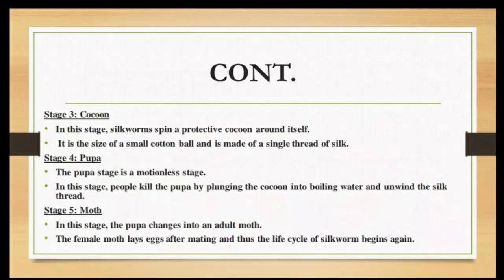Stage 3: Cocoon. In this stage, the silkworm spins a protective cocoon around itself. It is the size of a small cotton ball and is made of a single thread of silk.